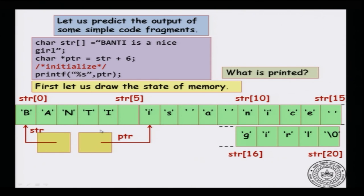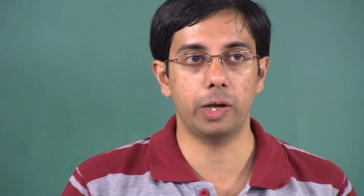The pointer is a char*, and it points to str plus 6. str is a pointer to the first location of the character array, and plus 6 would jump 6 character locations away from str[0]. The important difference from the integer example is that here, since it is a character array, str plus 6 jumps 6 character locations. How the plus operator is interpreted depends on what type the array is.